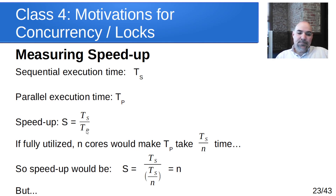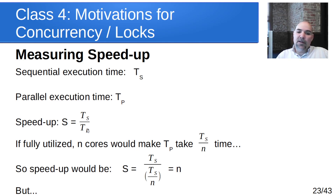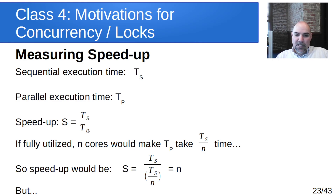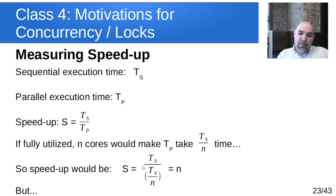If fully utilized with n cores, T_P equals T_S over n. Think of it like digging fence posts: with 100 fence posts, 10 minutes each, get 100 friends and it still takes 10 minutes total — a speedup of 100. Two people gives speedup of 2; it's twice as fast. 100 people gives speedup of 100, a hundred times as fast.